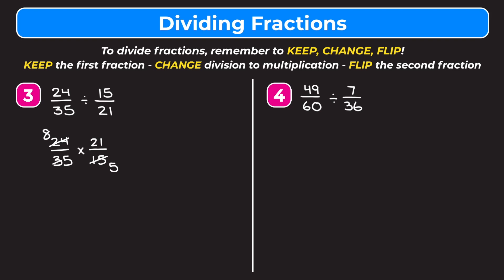Twenty-one divided by seven is three. Now I have eight times three on top, which is twenty-four, and five times five on the bottom, which is twenty-five. Because we fully simplified and cross-reduced, we don't have to simplify at the end. It's a proper fraction so no mixed number needed — we get twenty-four twenty-fifths as our answer.